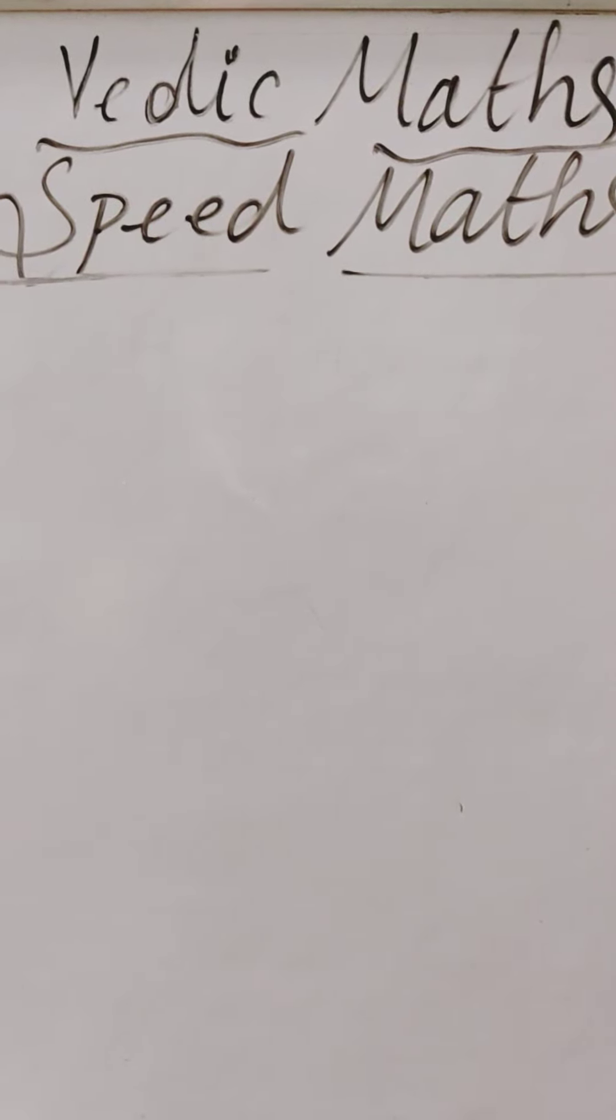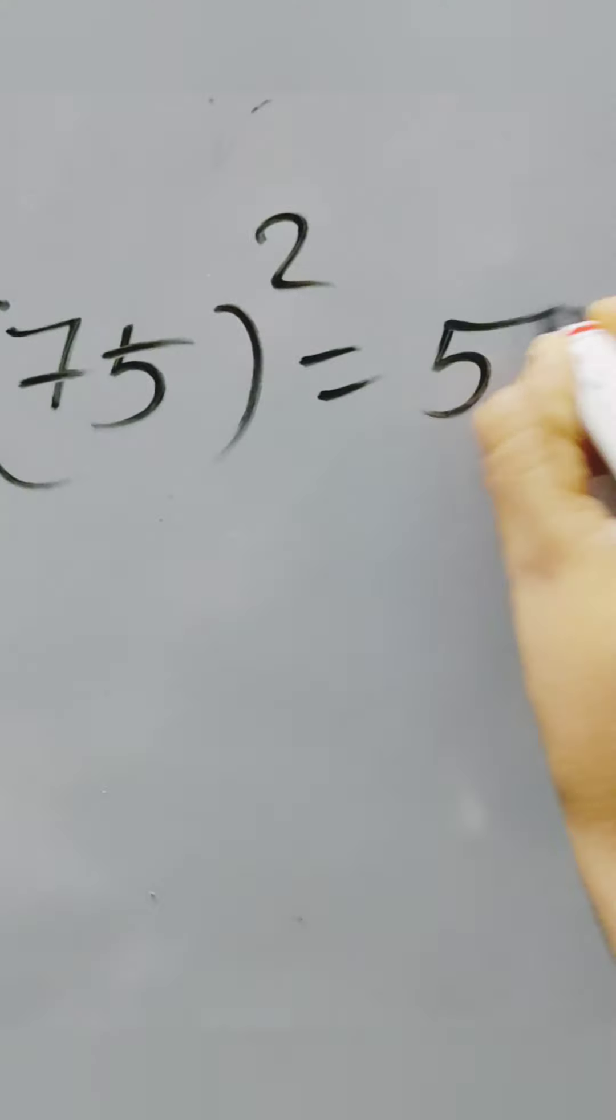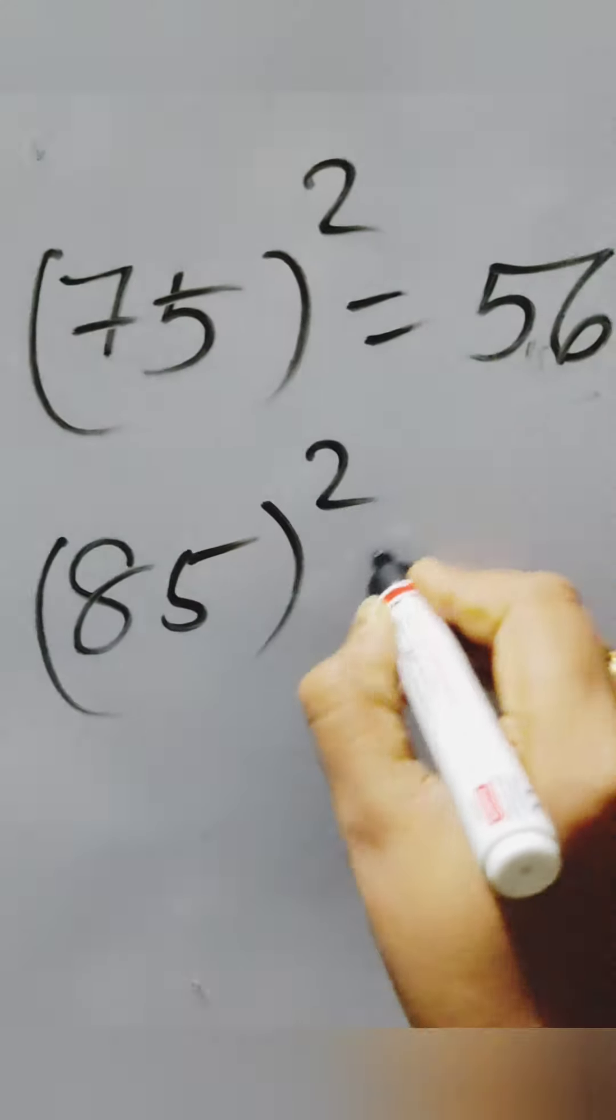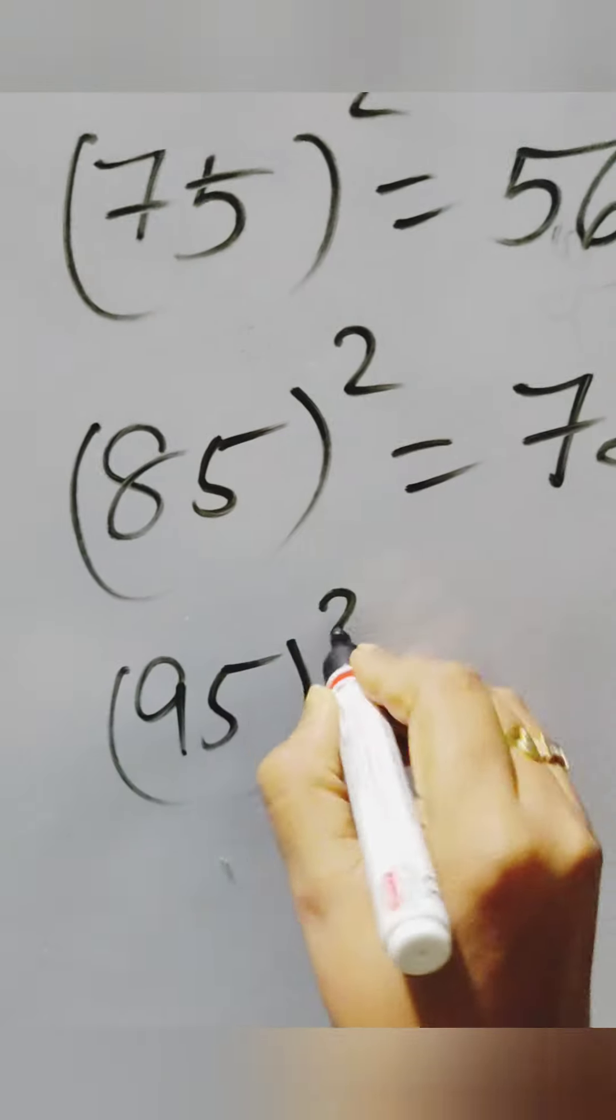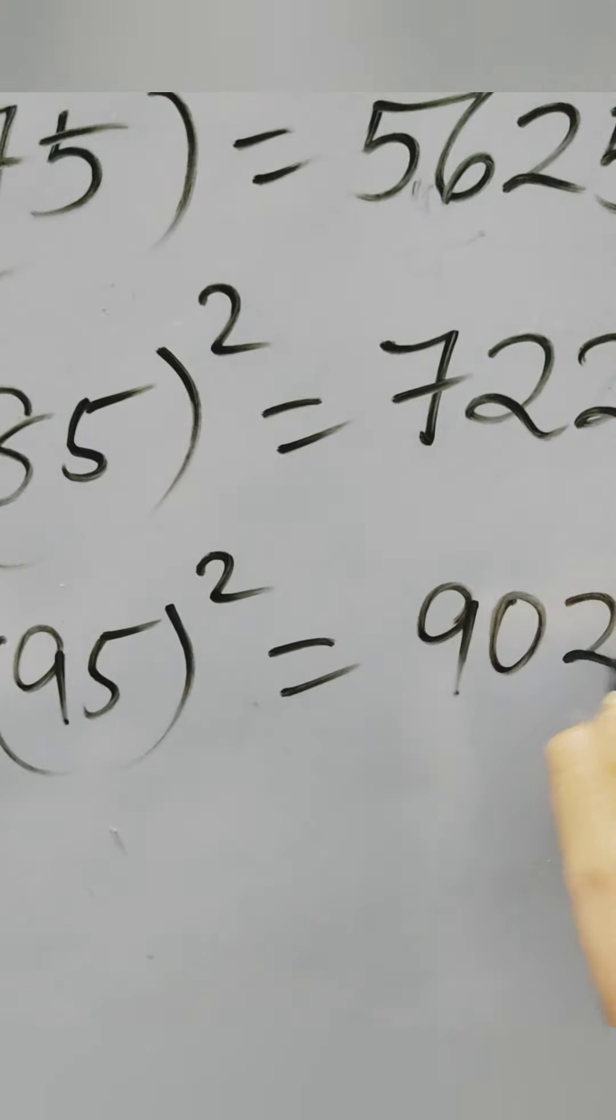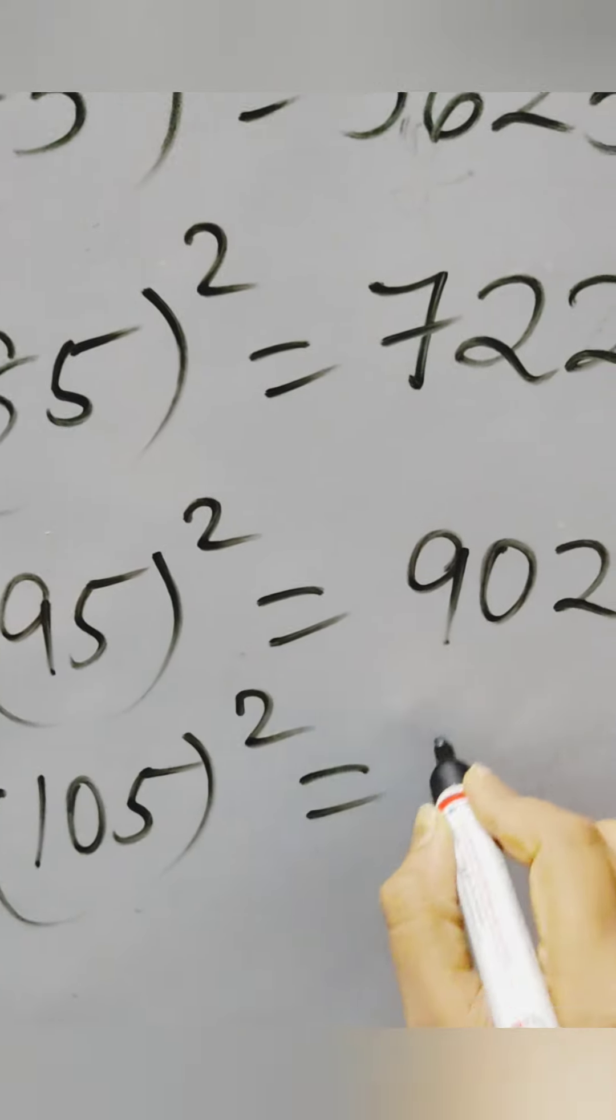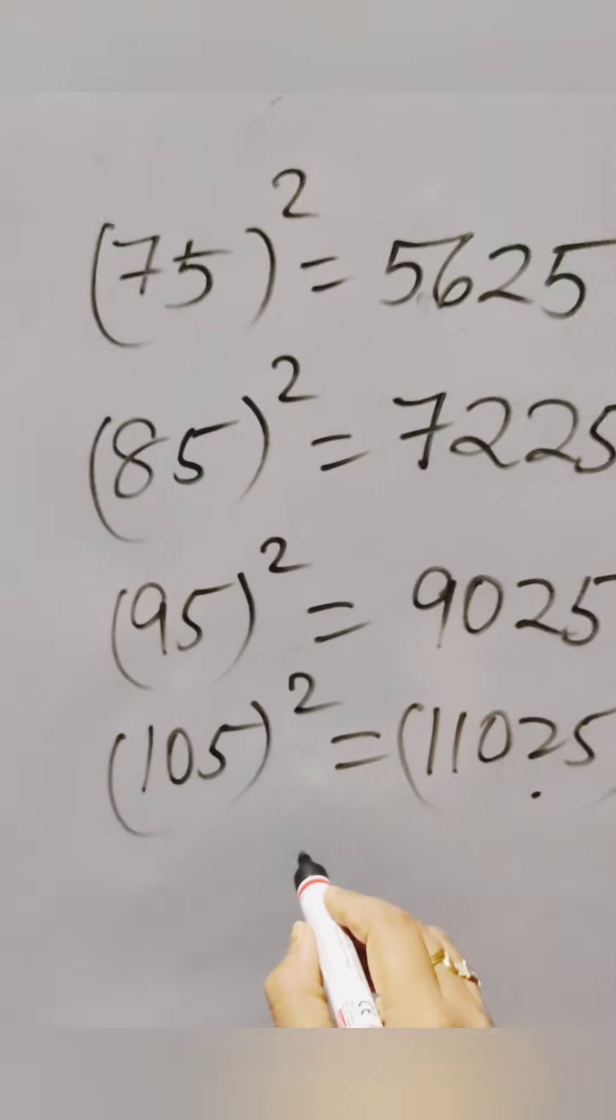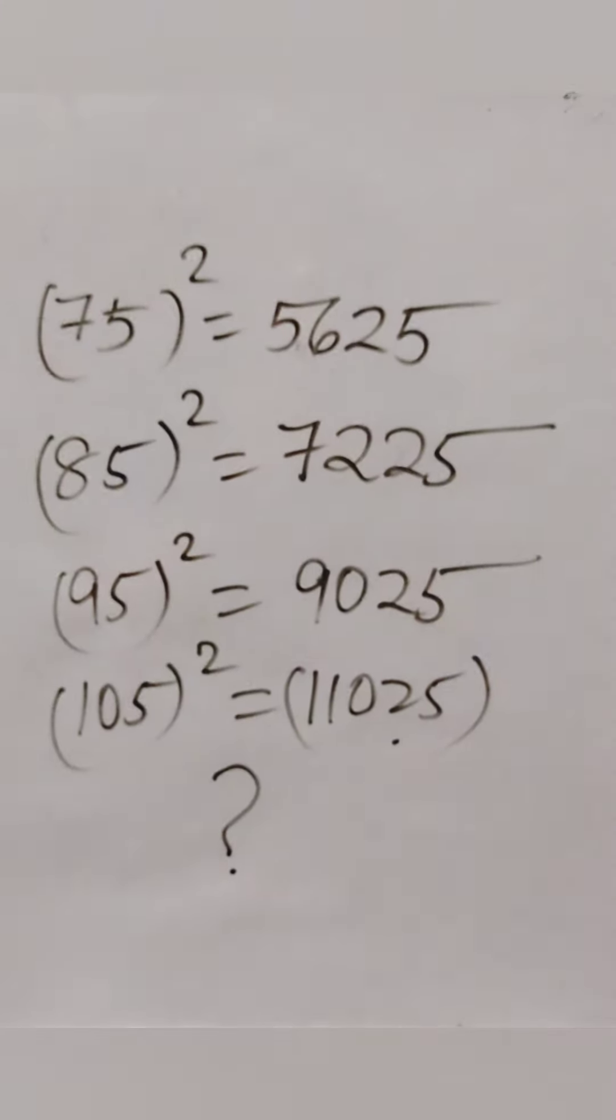Today we are going to learn Vedic Maths or Speed Maths. As you know, most of the students are very prompt to finding out the squares of numbers. Whatever the big numbers, if you are going to find out the squares, it's easy to find it out. Can you see that without any calculation how I have done it here? How is that possible? Let's check it out.